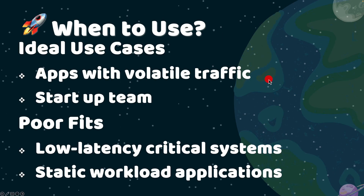It's great for apps with traffic that changes often. Auto Mode is ideal for startups or teams without Karpenter expertise. If you want AWS to handle more of the heavy lifting, Auto Mode is a good fit. When should you not use it? It's not great for apps that need very low latency with unpredictable traffic, not ideal if your workload is static, and cannot be used if you need a custom AMI or additional CNI plugins.